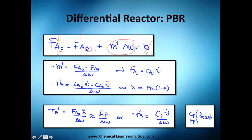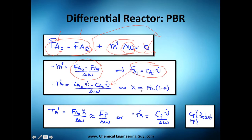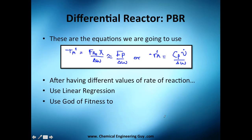You can use flows or concentrations. I prefer concentrations. We want to base our equations on the product, so we use the flow of the product — which equals the conversion of the initial flow. Equivalently, this is the concentration of the product times the volumetric flow rate, always dividing by the catalyst mass. That's our model — you can use either the flow form or the concentration-times-volumetric-flow form.